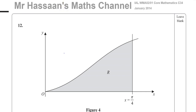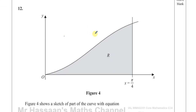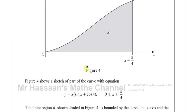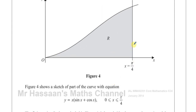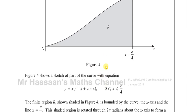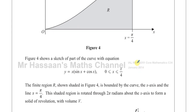This question is to do with volumes of revolution and as such is related to the P4 material, the new specification. Figure 4 shows a sketch of the part of a curve with the equation y equals x times (sine x plus cosine x), where x is between 0 and pi over 4. The finite region R shown shaded in figure 4 is bounded by the curve, the x-axis and the line x equals pi over 4. The shaded region is rotated through 2 pi radians about the x-axis to form a solid of revolution with volume v.